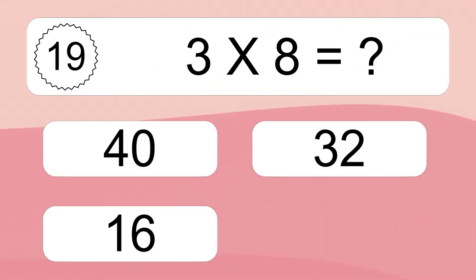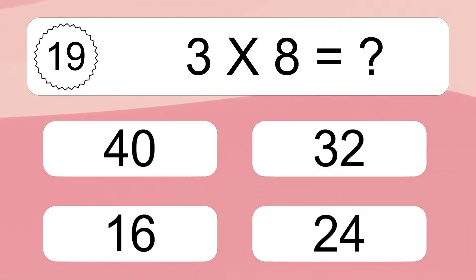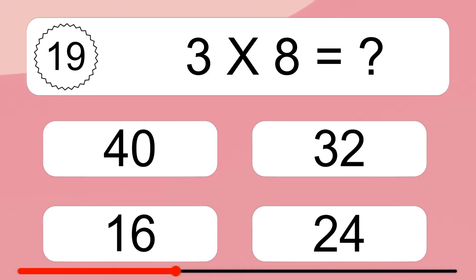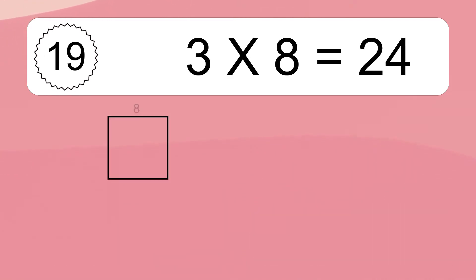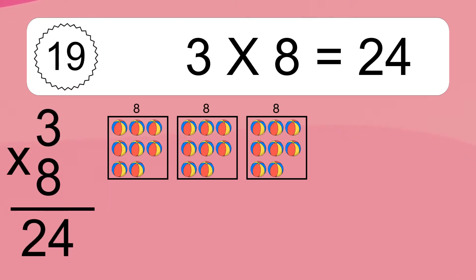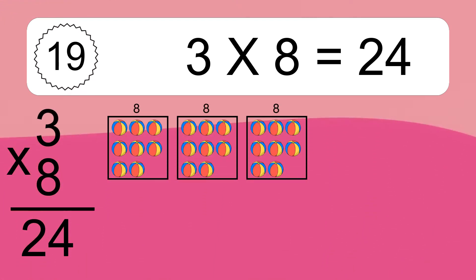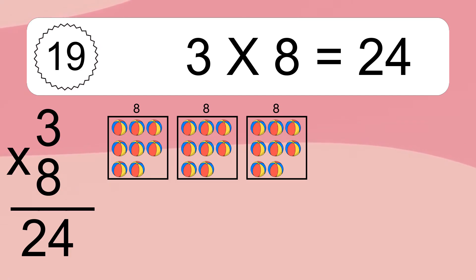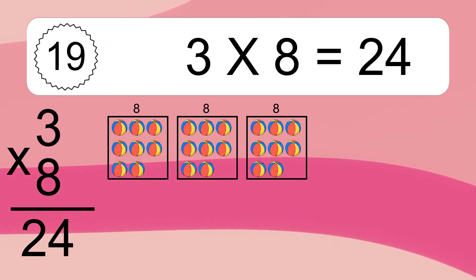Three times eight equals what? We have three boxes, and each box has eight colorful balls inside. If you count all the balls in all the boxes together, you will have three times eight balls. This equals 24 balls.